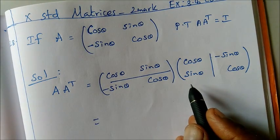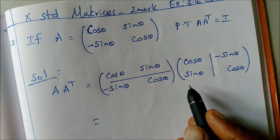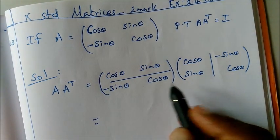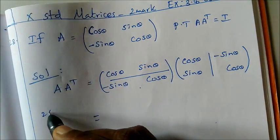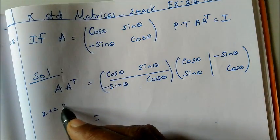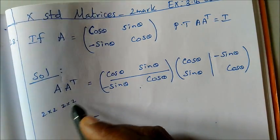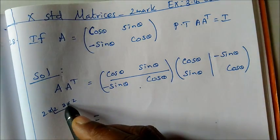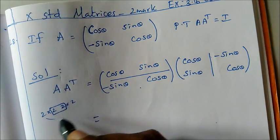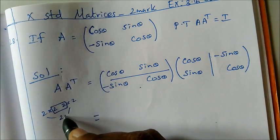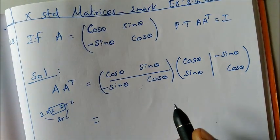Now matrix multiplication is possible. The order of A is 2 by 2, and the order of A transpose is also 2 by 2. So the resulting matrix will be of order 2 by 2.